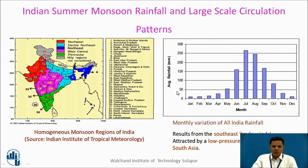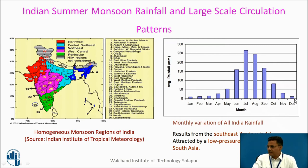This graph shows the monthly variation of all-India rainfall. From January through May, rainfall is low. We observe that about 80% of rainfall takes place in June, July, August, and September. Then in October, November, and December it recedes.